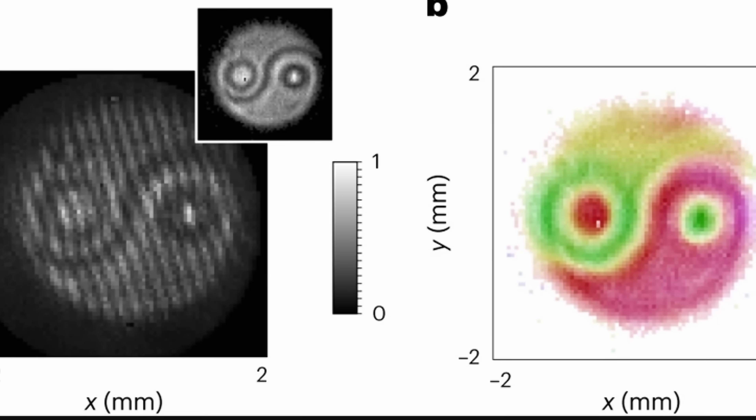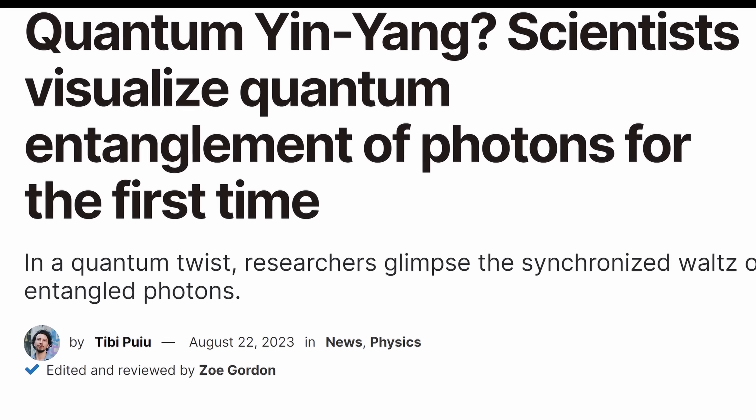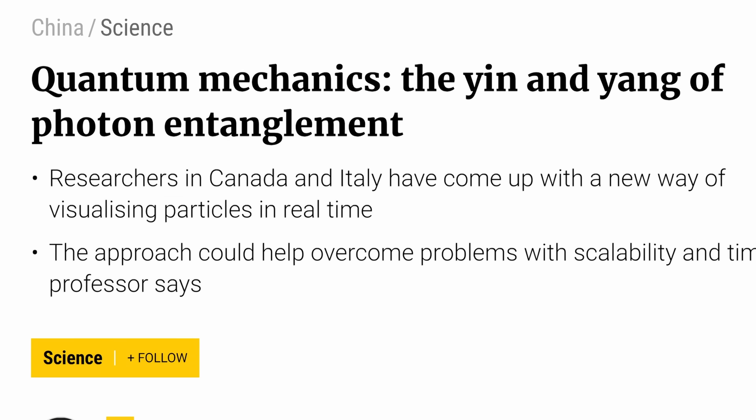What are we going to be talking about today? Another intriguing story where the press might have actually misinterpreted something that was not discovered at all. Let me show you what I'm talking about. It was referred to as the Quantum Yin and Yang, with titles like 'Quantum Yin and Yang shows two photons being entangled in real time,' 'Scientists visualized quantum entanglement of photons for the first time,' and 'The Yin and Yang of photon entanglement.' I'm pretty certain most of you have already seen this image because it went viral approximately one week ago.